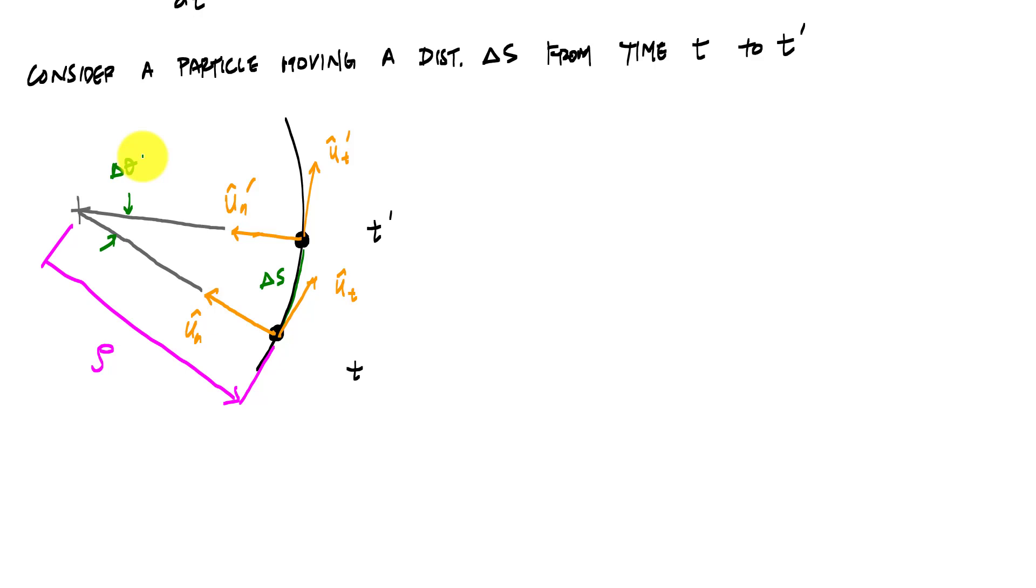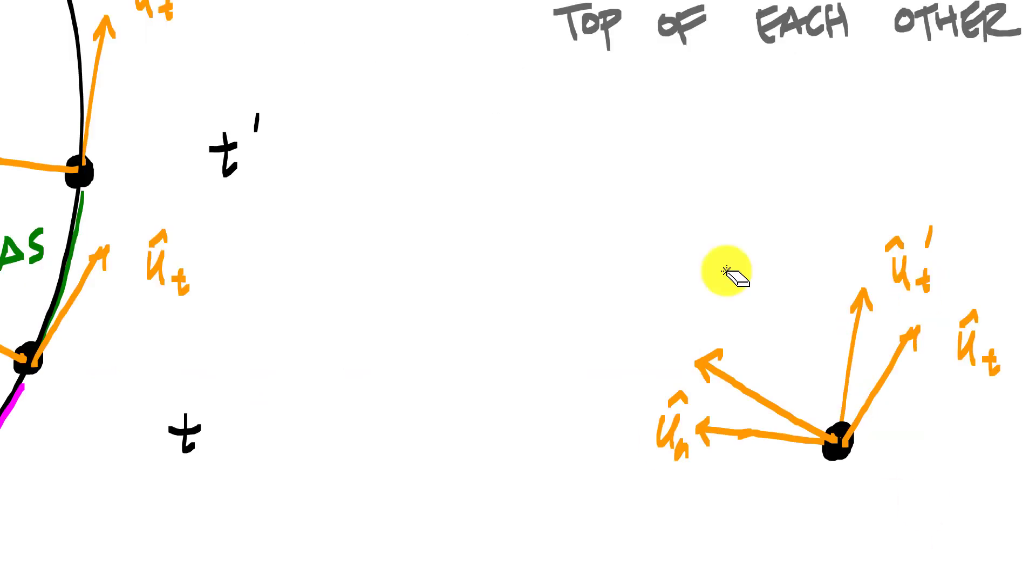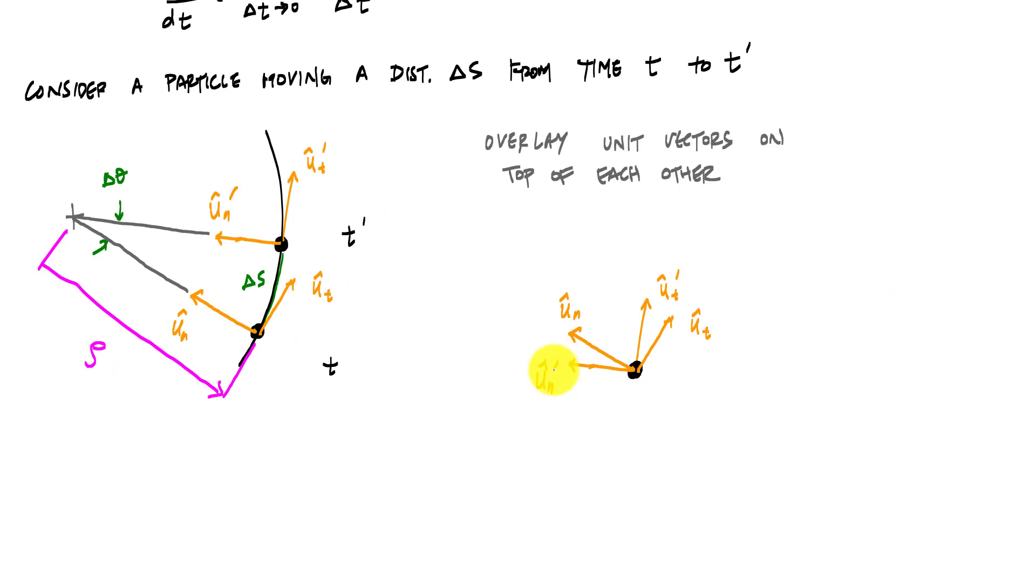And then if I overlay the unit vectors at t and t prime on top of each other or superimpose - look at that, that overlaid on itself. And here, let me clean this up. All right. So those are my unit vectors overlaid on top of each other. Let me make this a little bit bigger.